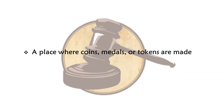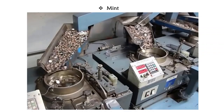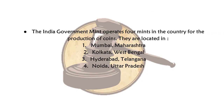A place where coins, medals or tokens are made — what would that place be called? The answer is a mint, M-I-N-T. Coins are minted here. The Government of India operates four mints in the country for production of coins, located in Mumbai, Kolkata, Hyderabad and Noida.